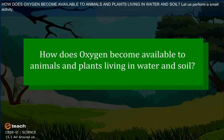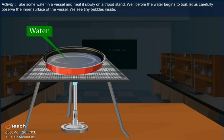How does oxygen become available to animals and plants living in water and soil? Let us perform a small activity. Take some water in a vessel and heat it slowly on a tripod stand.